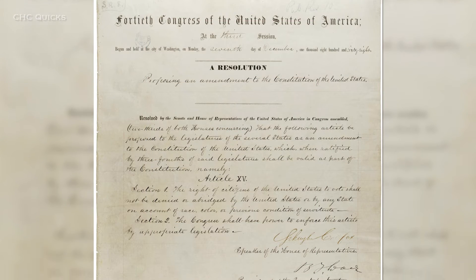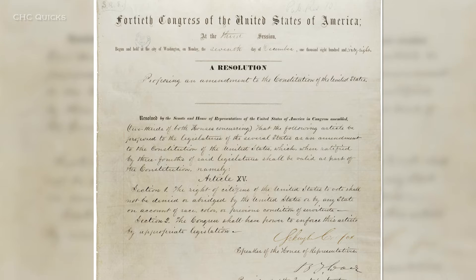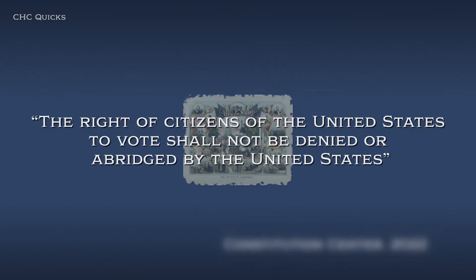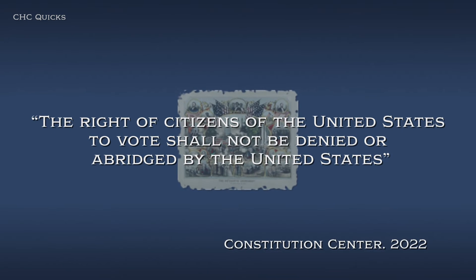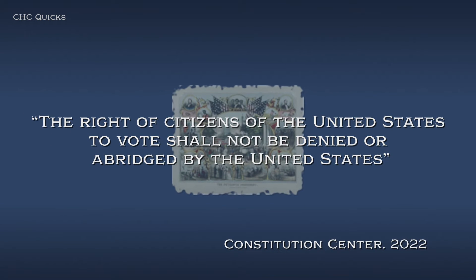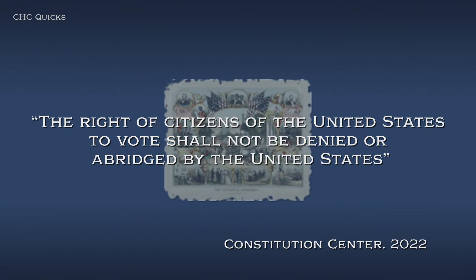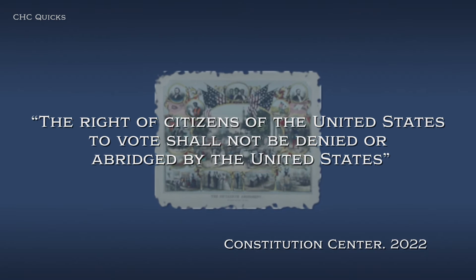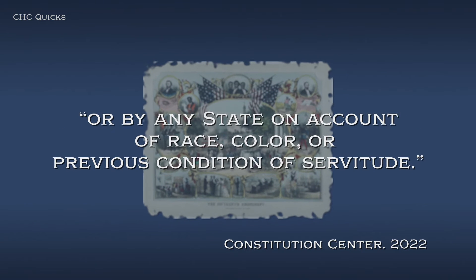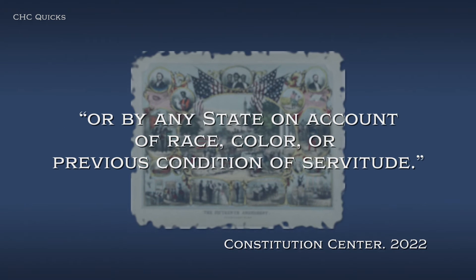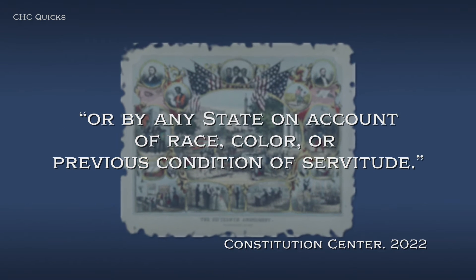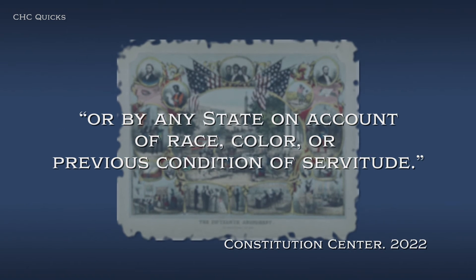And finally, in 1870, the 15th Amendment was ratified: "The right of the citizens of the United States to vote shall not be denied or abridged by the United States or by any state on account of race, color, or previous condition of servitude."